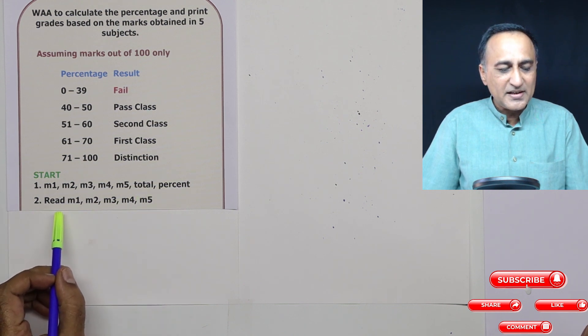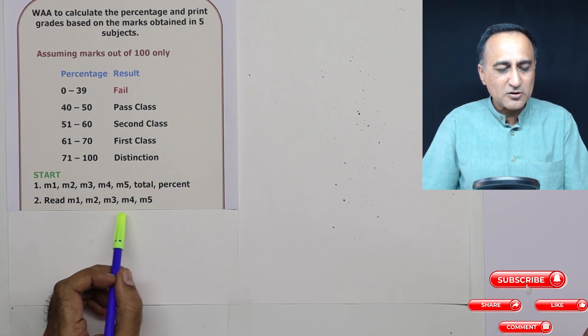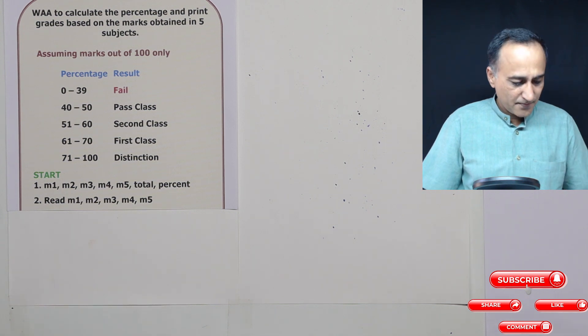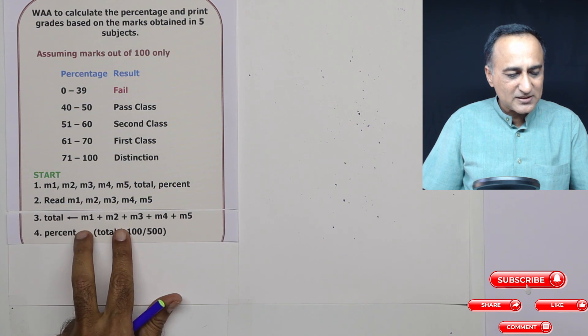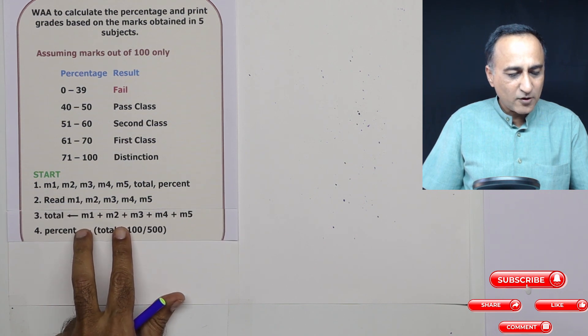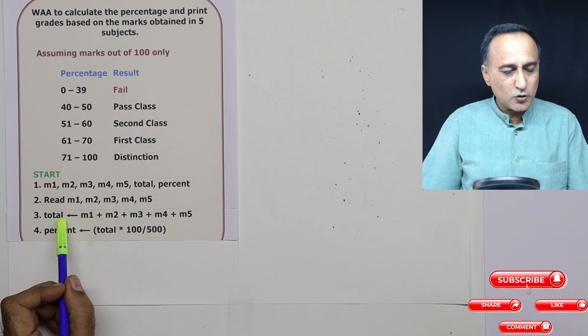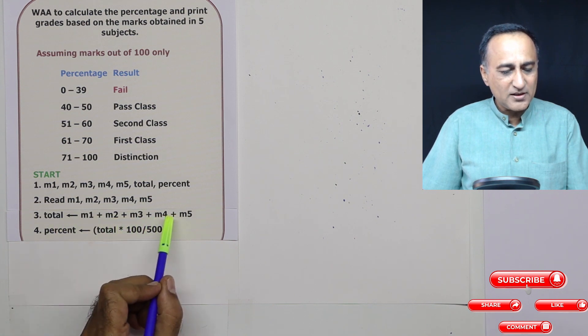The only data I need is I need to read the marks of the five subjects from the user. In the next step, what I am going to do here is once I read the marks, I am going to calculate the total. So total is the sum of all the marks.